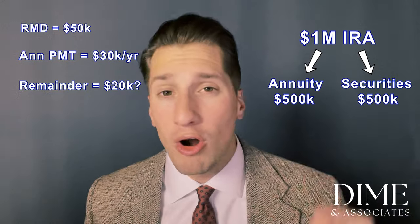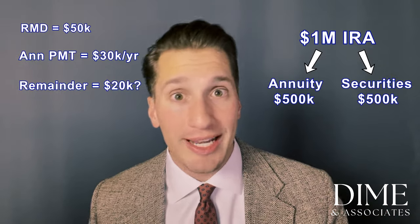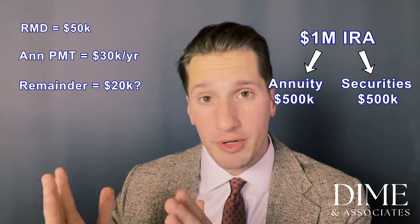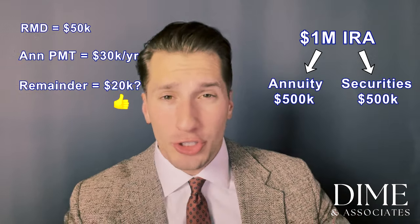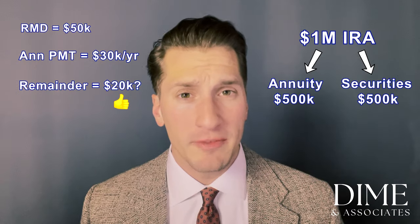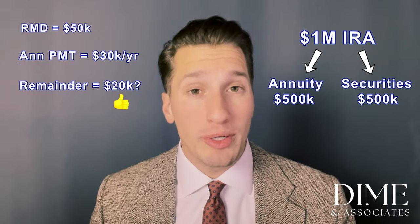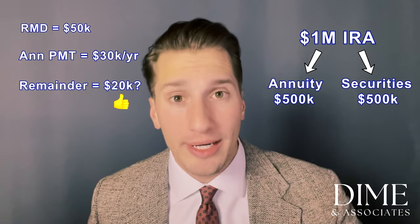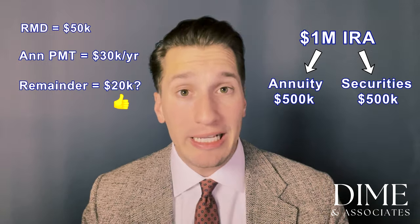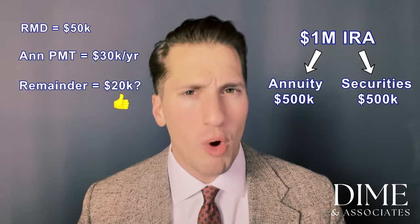Nowadays — meaning 2023 and beyond — you are allowed to factor in the total annuity payment from that IRA to offset the total required minimum distribution. So now we can rely on our intuition: if your total RMD for the year is $50,000 and the annuity kicks off $30,000, you only need to pull out $20,000 from the securities portion of your IRA. The IRS only cares that $50,000 in total was removed from your IRA. If you're Googling this, this would be Section 204 of the Secure Act 2.0, and the concept is often referred to as annuity overages — where your annuity kicks off more in income than the RMD requires.